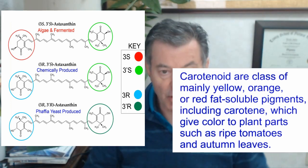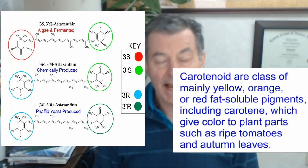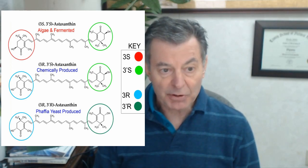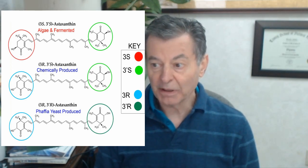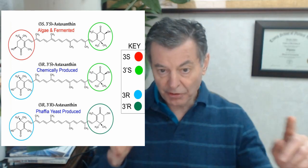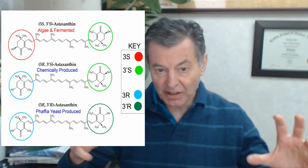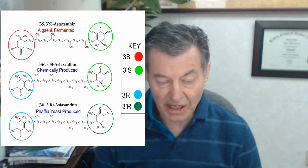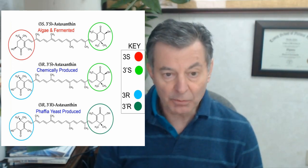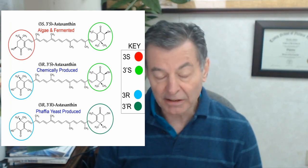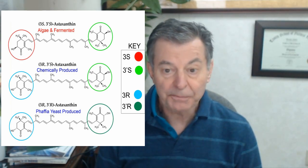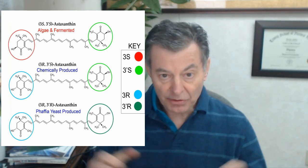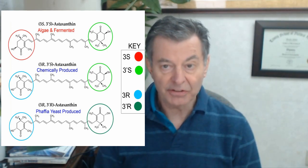The most difficult carotenoid to produce is astaxanthin, and you'll find it from algae-produced astaxanthin. That's good, but the algae-produced, which is 3S3S, they have these esters or fat molecules on either end. It's not really been proven, but it looks like it really isn't as well absorbed by the body with those esters — the esterified astaxanthin.